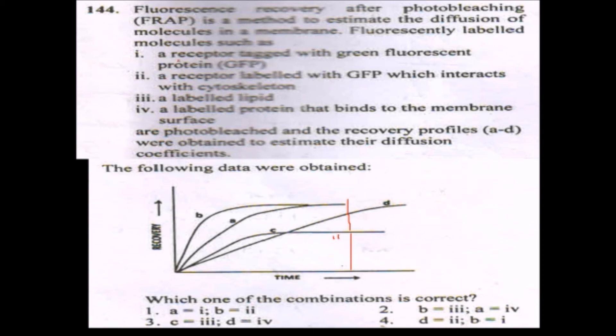Next, if you see the receptor tagged with green fluorescent protein and the labeled lipids, the lipids will recover most quickly. The last time period is represented by B, which means it is the fastest. Number three will be the labeled lipids, so B represents the labeled lipids.